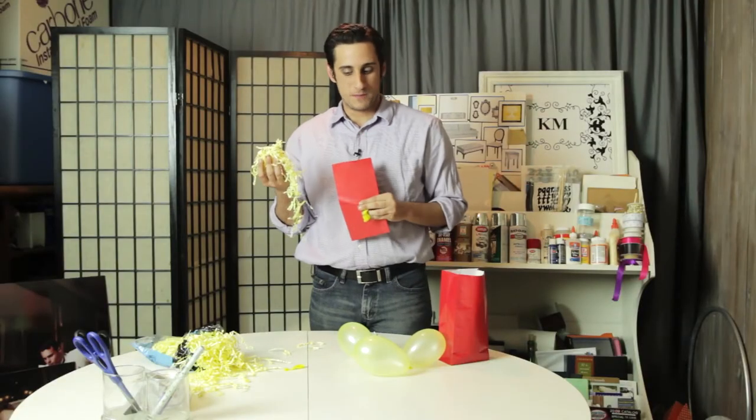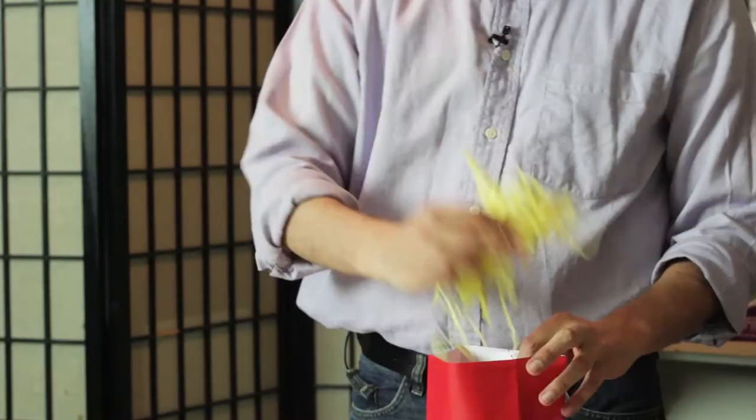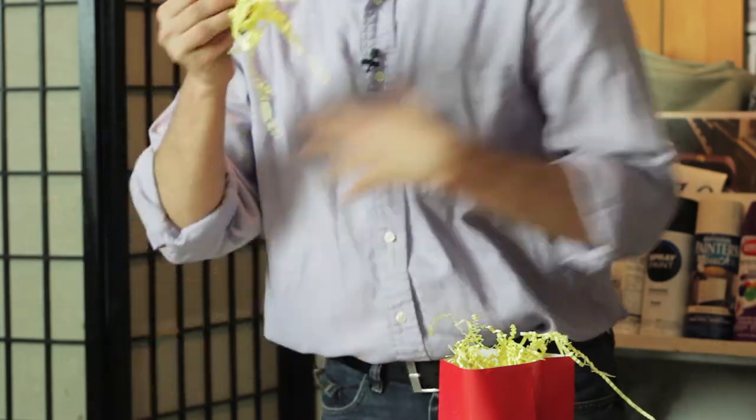Now I'm going to show you how to make this popcorn bag. What you want to do first is open up your bag and fill it with your yellow confetti. Now you want to kind of pour it out just like it is at the movie theater. The popcorn's pouring out of the bag. There's so much of it.